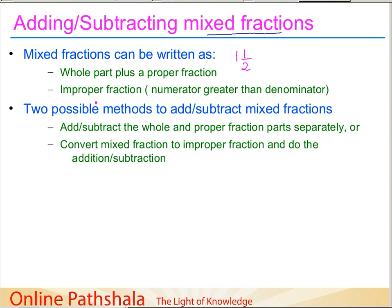The other way to represent a mixed fraction is as an improper fraction, in which the numerator is greater than the denominator. You can convert a mixed fraction into an improper fraction by multiplying and adding: 2 times 1 plus 1, all over 2, which gives us 3/2. So 3/2 is the improper fraction form of the mixed fraction 1 and 1/2.